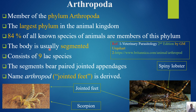The body is usually segmented and the segments bear paired jointed appendages. The name 'arthropod' means jointed feet, derived from that word. In this picture you can see the jointed feet. This picture is actually the scorpion, and this is the spiny lobster. You can observe that jointed feet are the main feature of Arthropoda.